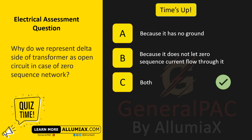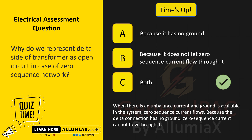The answer is C — both. When there is an unbalanced current and a ground is available in the system, zero-sequence current flows. Because the delta connection has no ground, zero-sequence current cannot flow through it.